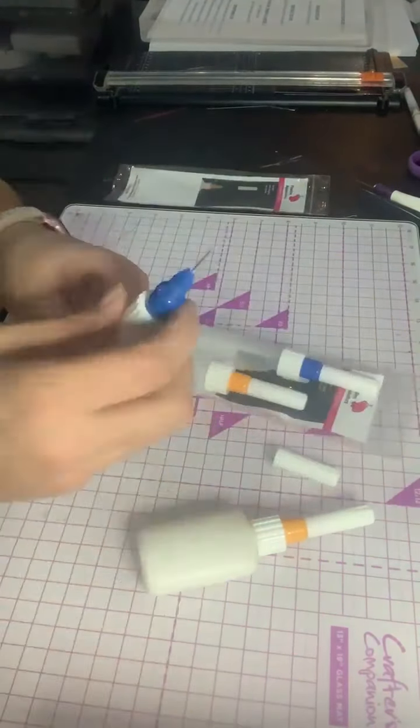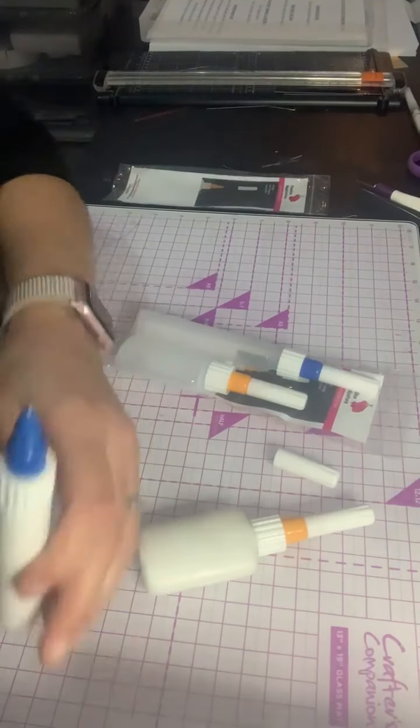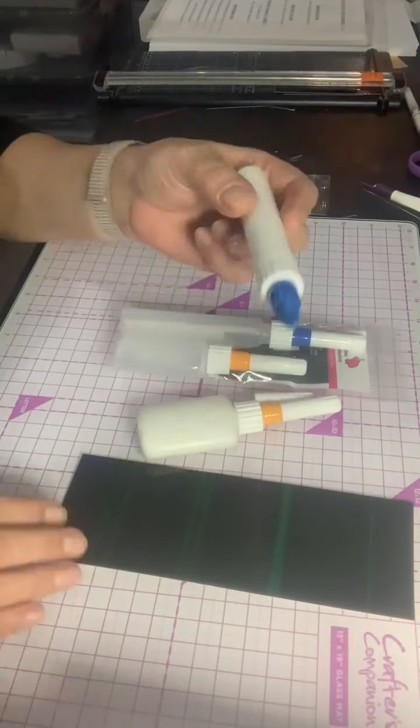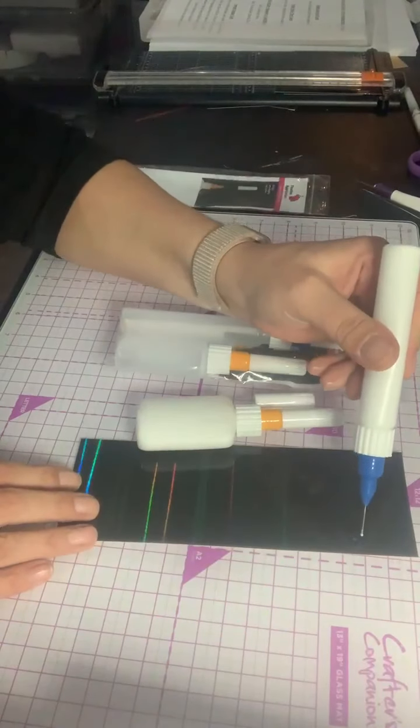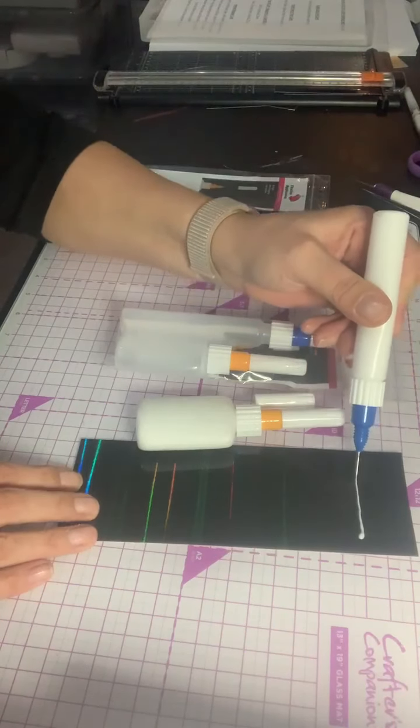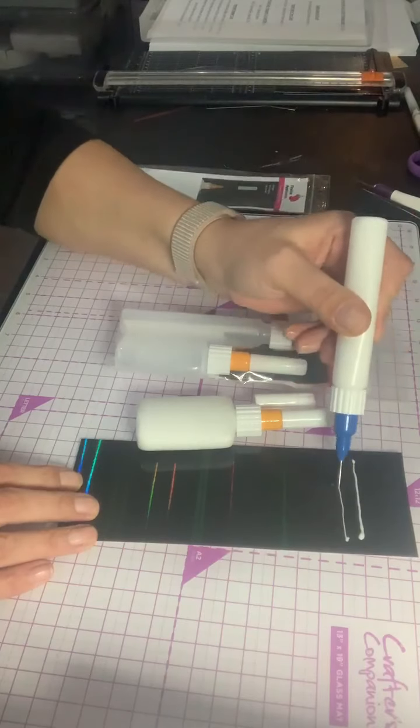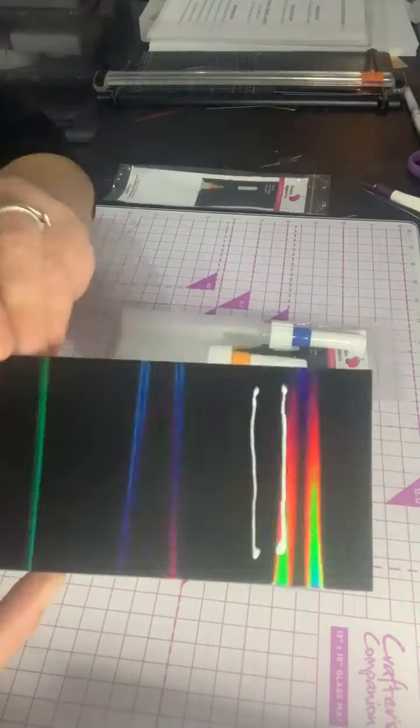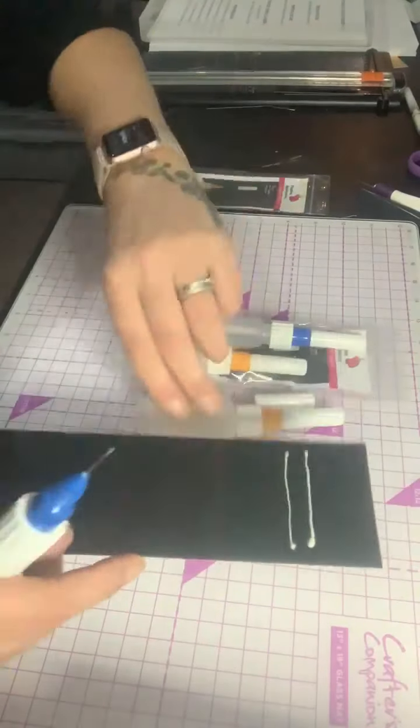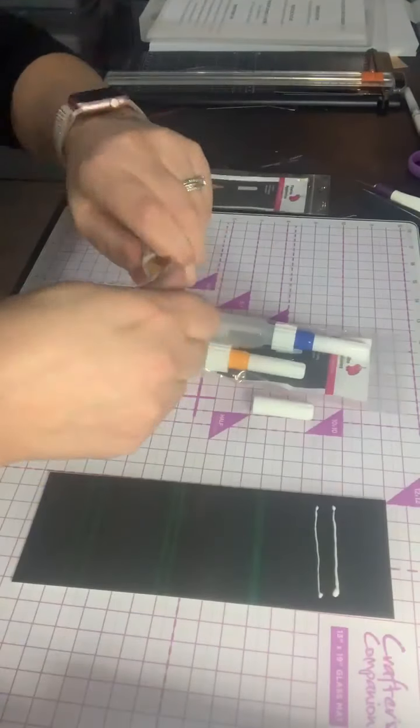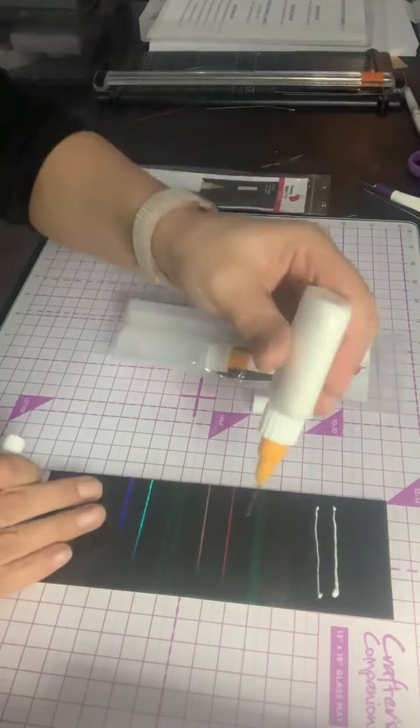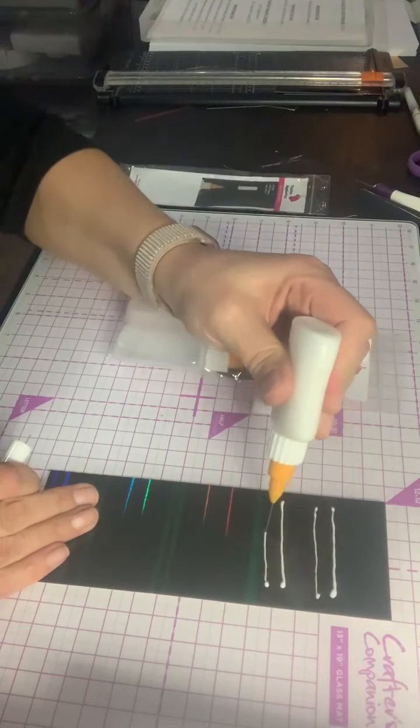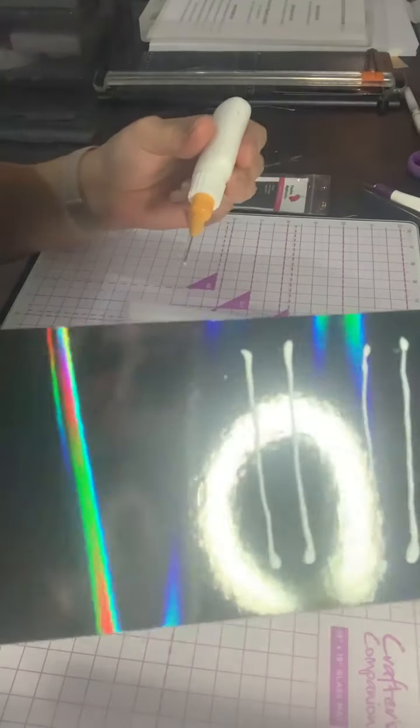So if I just grab some black card, I know it's shiny, but you're going to get the gist. If I just gently squeeze, that's the 0.5 mil. I'll just bring that up to you. Okay. And then this one, this is the 0.8 mil. Okay.